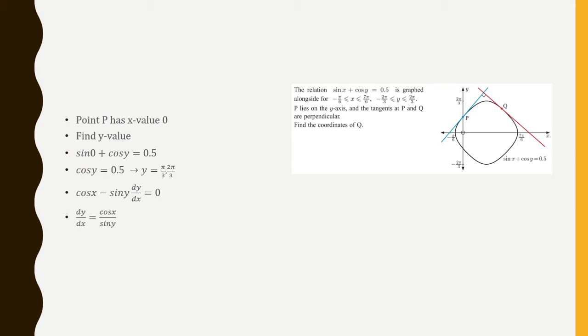I'm going to solve for dy over dx to get cosine of x over sine of y. And now I can plug in P to find the slope of that line. So x is zero, y is pi over three, and we end up with two over root three. So the slope of the blue line is two over root three. That means the slope of the red line is negative root three over two because they're perpendicular, opposite reciprocal.